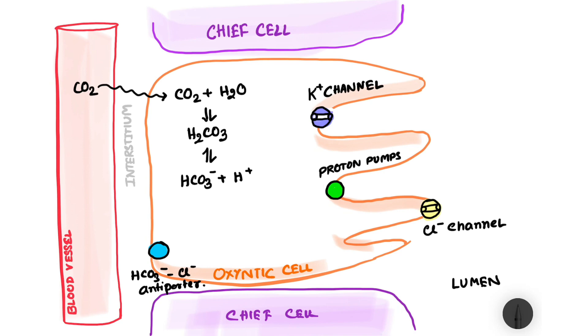Now this H plus ion is pumped out from the cell into the lumen by the proton pump. And this proton pump as it pumps out H plus ions it at the same point of time also pumps in potassium from the luminal site into the cell.